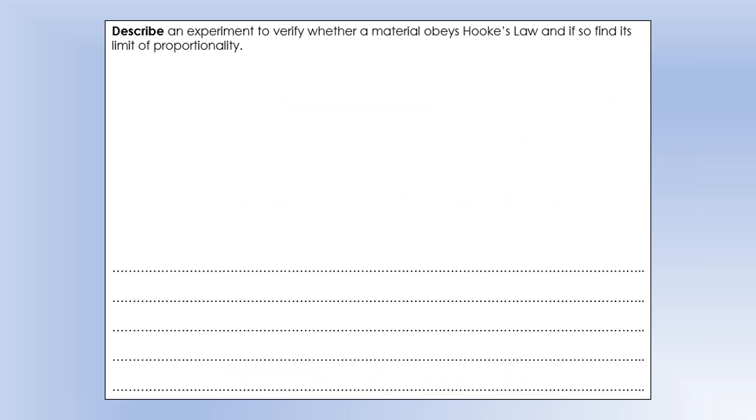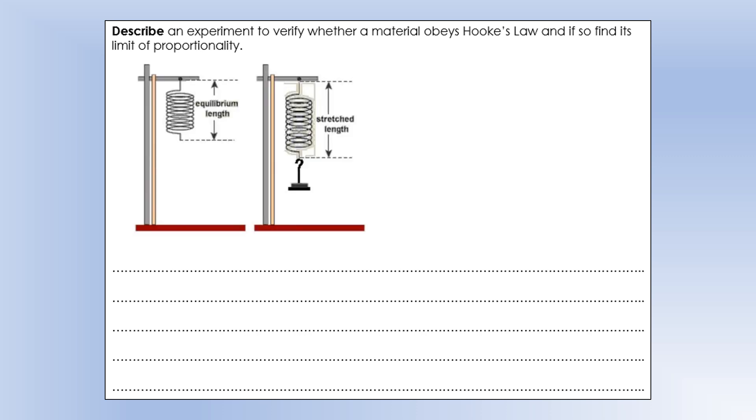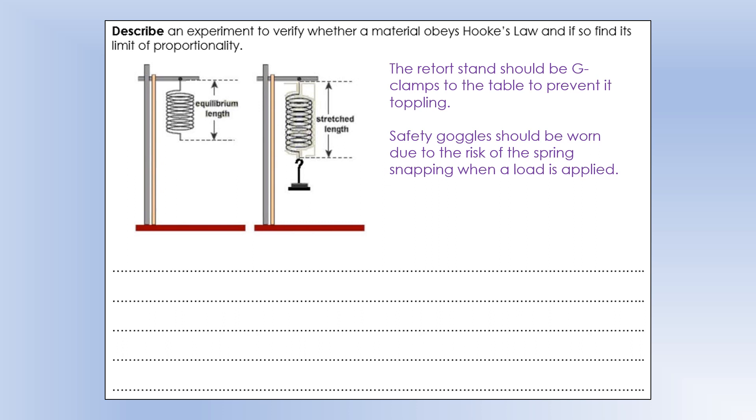Let's look at an experiment to verify whether an object obeys Hooke's law, and how we find the limit of proportionality. The experiment is very similar to this one. We need a retort stand and a spring and a set of hanging masses. We're going to hang masses on the spring and measure its extension. We'd need G-clamps to clamp the retort stand to the table to prevent it toppling over. Anytime you're stretching an object, there is a risk of it snapping, so you need to wear safety goggles.